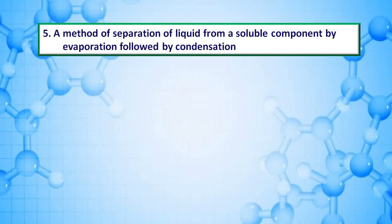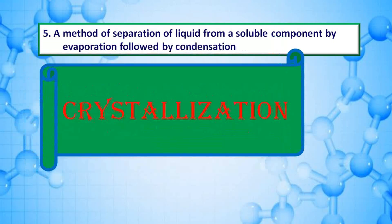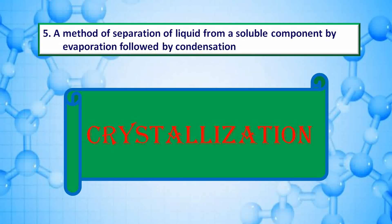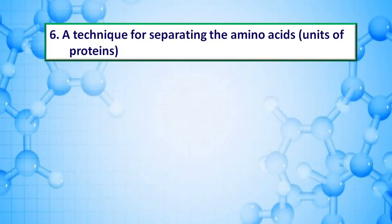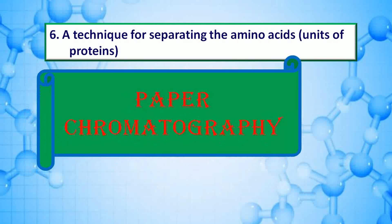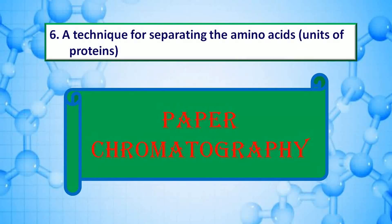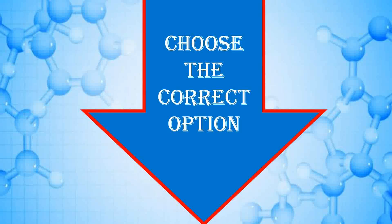A mixture with its components uniformly distributed — answer is homogeneous mixture. A method of separation of liquid from a soluble component by evaporation followed by condensation — answer is crystallization. A technique for separating the amino acid units of proteins — answer is paper chromatography.